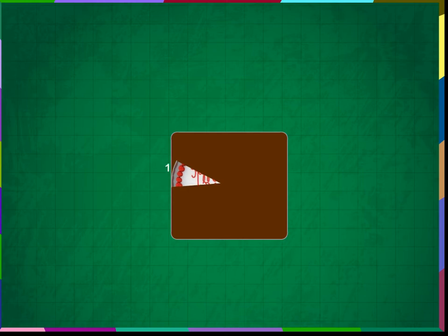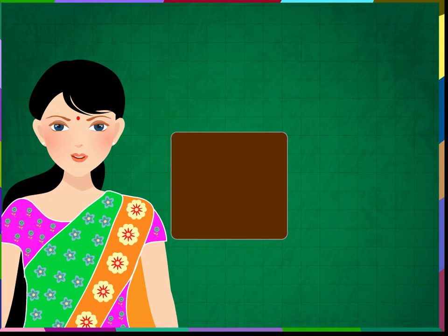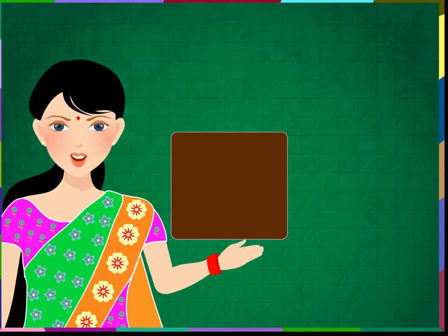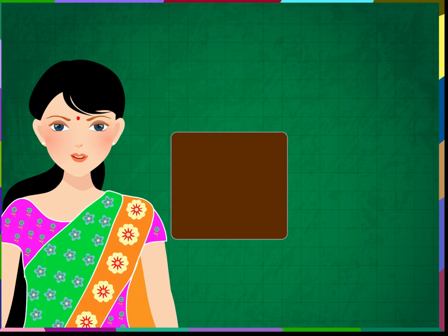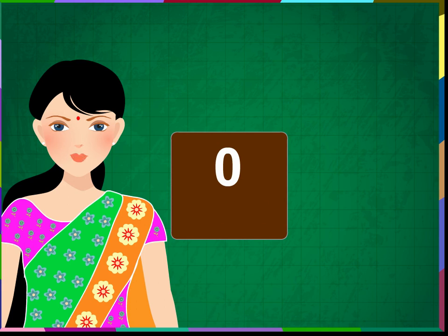Anut, you can take it. See here, students — all pieces of cake are taken away by you all. So there are no pieces of cake left in the box. The box is empty. This means we can say zero cake is left in the box. We write zero as zero.